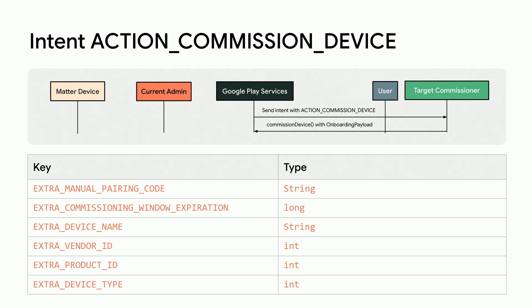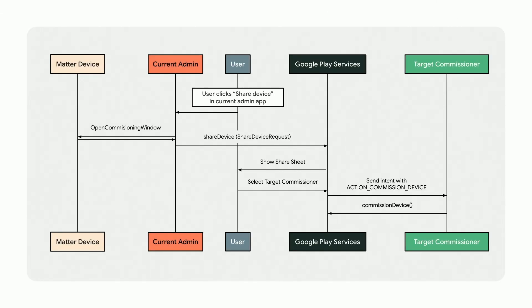As a commissioner receiving such an intent, you can use this information to construct a new commissioning request and use this with the commission device API. And with that, we have the whole picture for sharing Matter devices on Android as shown in the full diagram, complete with all the steps we discussed.